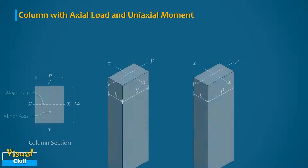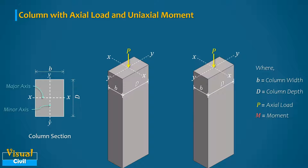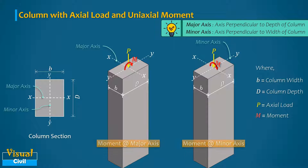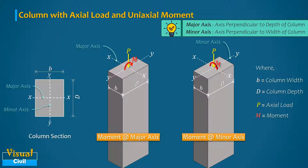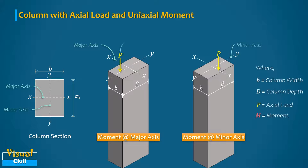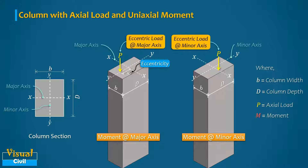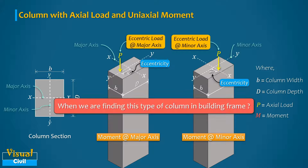When a column is subjected to an axial load with a moment about any one axis — either the major axis or minor axis — the column is said to be axially loaded with uniaxial moment. Sometimes the axial load acts at an eccentricity e from the column center along any one axis only; in that case also it is called a column with uniaxial moment.